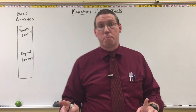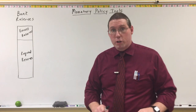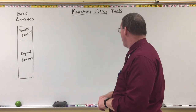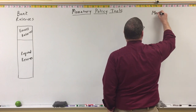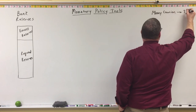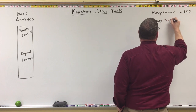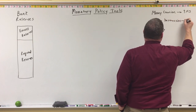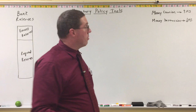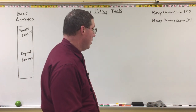The money creation process is a chain reaction that results in an increase in the money supply, and the money destruction process is a chain reaction that results in a decrease in the money supply. When there's an increase or decrease in the money supply, there's then a change in interest rates in the market.